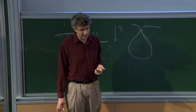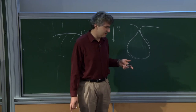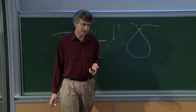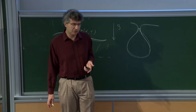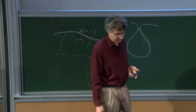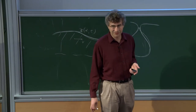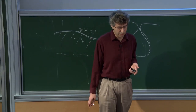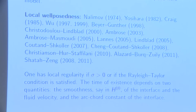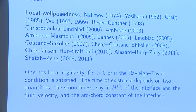The local well-posedness, as I said, is well understood. It goes back to earlier work of Nalimov, Yosihara-Craig. The natural local well-posedness in Sobolev spaces goes back to work of Wu from the late 90s. There are lots of models and a lot of work proving this local well-posedness theory, including contributions from Beyer-Günther, Christodoulou-Lindblad, Ambrose, Ambrose-Masmoudi, Lannes, Lindblad, Coutand-Shkoller, Shatah-Zeng, and others. I stopped at 2011; there's more work after that.